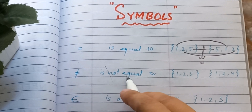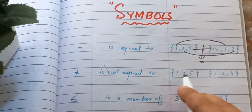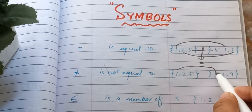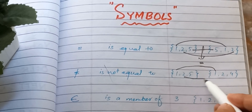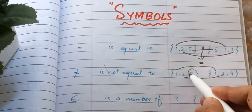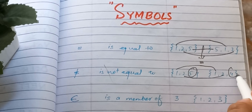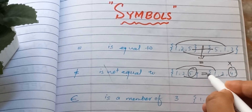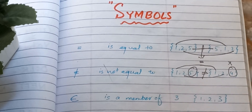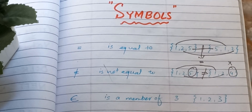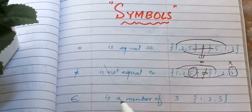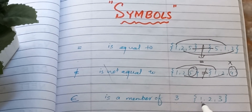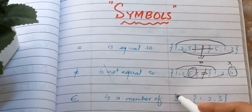The second symbol is 'not equal to.' Set one is {1, 2, 5} and set two is {1, 2, 4}. Here, 1 and 2 are matching, but 4 and 5 are different, so we put the 'not equal to' sign.